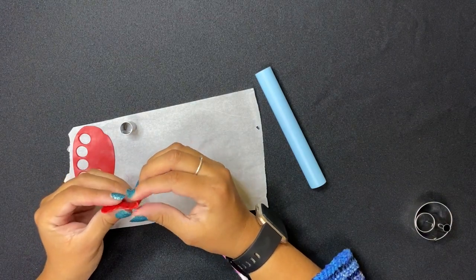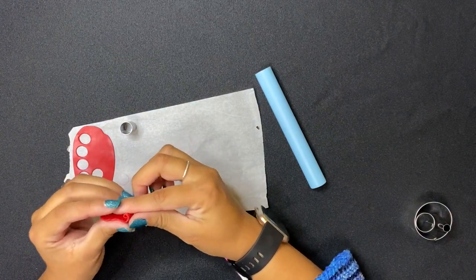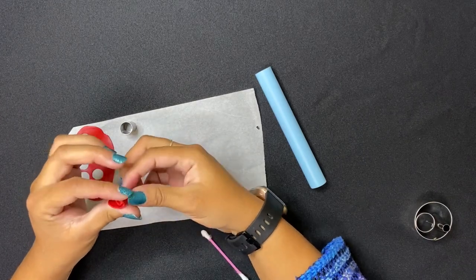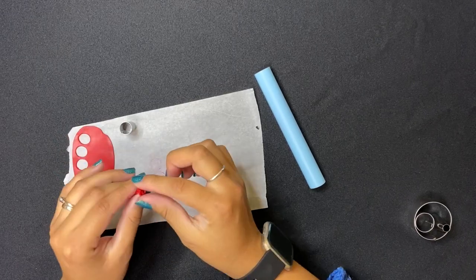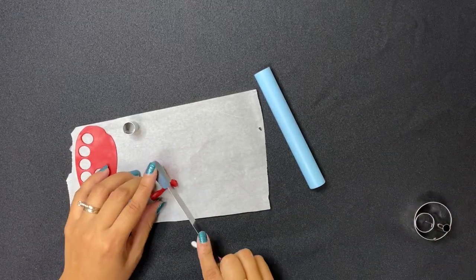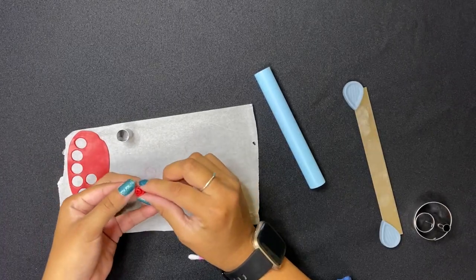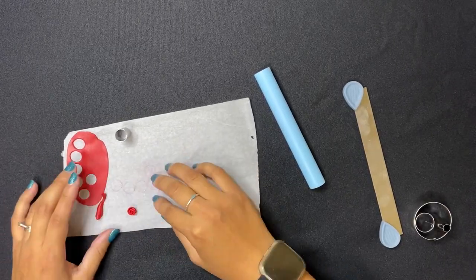Then you're going to very carefully take one end and start rolling it up, kind of like a cinnamon roll. Squish the end by rolling it like this, and then you can cut off the extra clay. Pull out the petals a little bit, and there you have your rose.